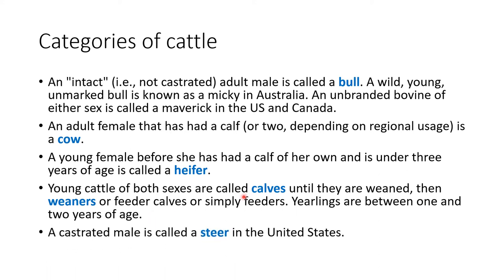A castrated male is called a steer — a very important term. A bull is non-castrated; a castrated bull is called a steer. The best quality of meat comes from a young bull, heifer, or steer. Cows typically don't have very good quality meat because they have already had calves. Weaners and calves have the most tender meat.